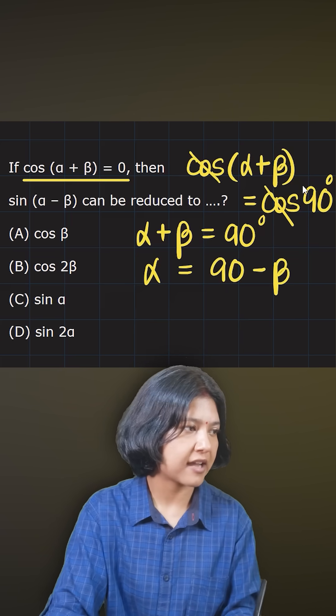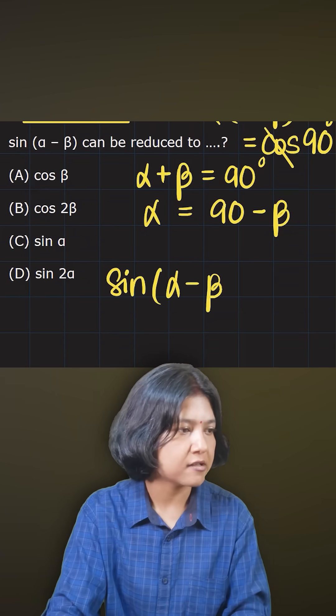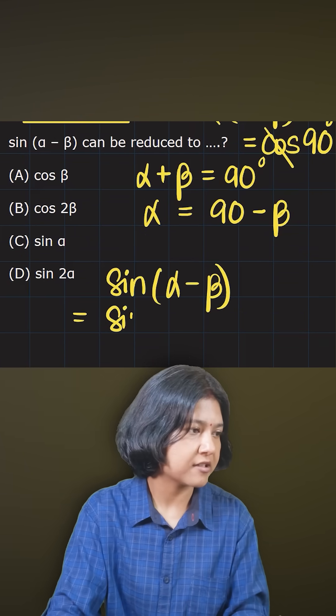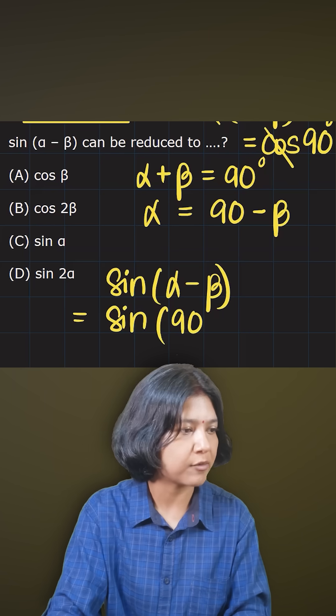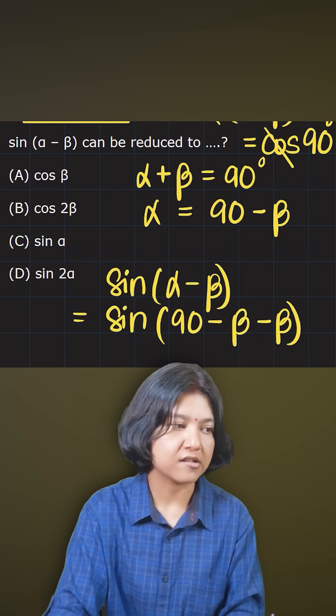The question wants me to find the value of sin(α - β). Now I know that α can be written as 90 - β, so I'm going to write 90 - β for α, keeping this minus β as it is.